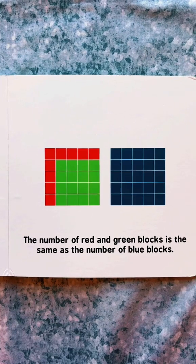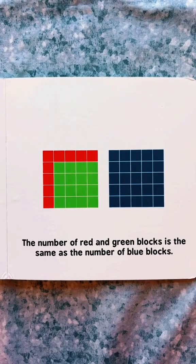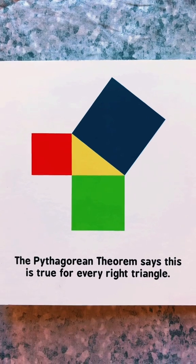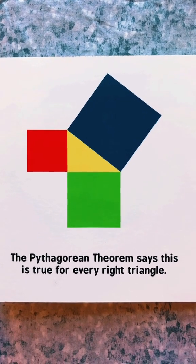Nine plus sixteen equals twenty-five. The number of red and green blocks is the same as the number of blue blocks. The Pythagorean theorem says this is true for every right triangle.